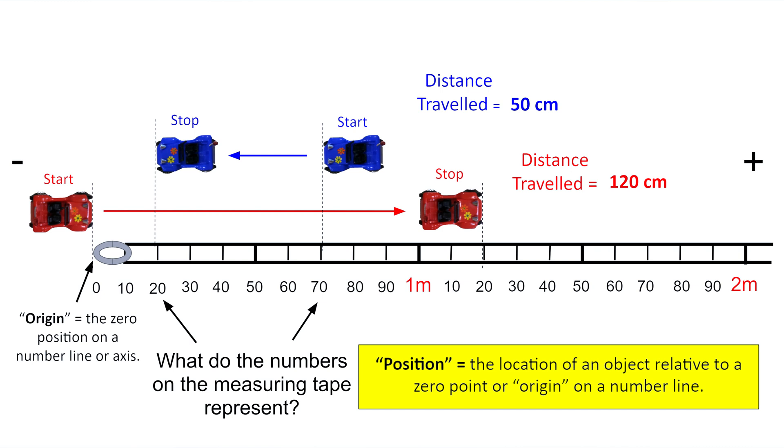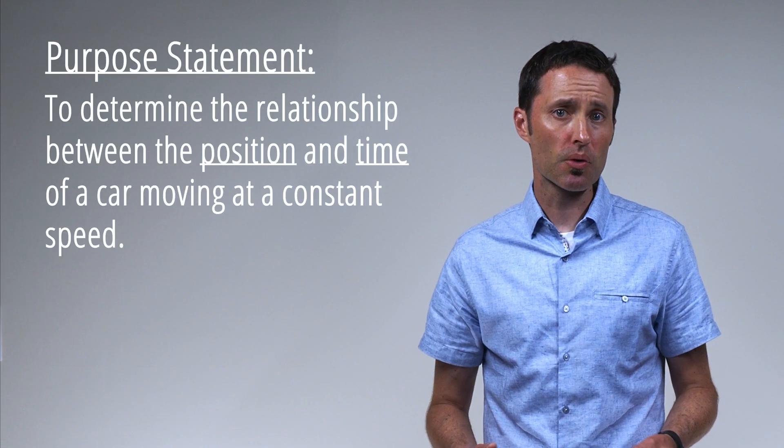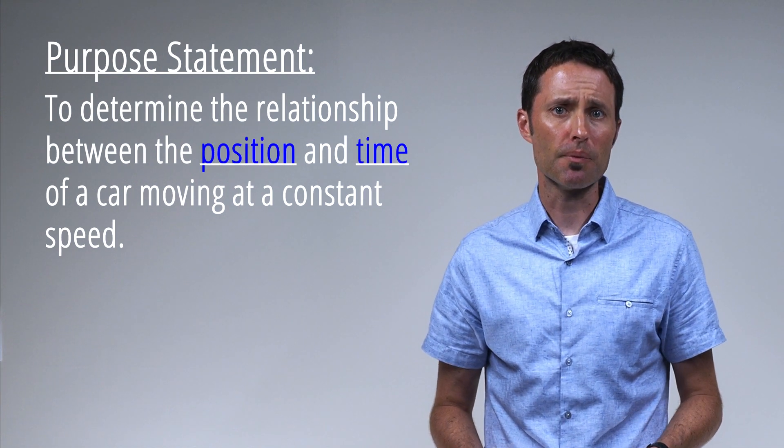With this in mind, our purpose statement should now read: to determine the relationship between the position and time of a car moving at a constant speed. By the end of the class discussion about how the data will be collected, the students should agree on a method which either measures the time it takes to reach certain specific positions or the position of the car at specific times.